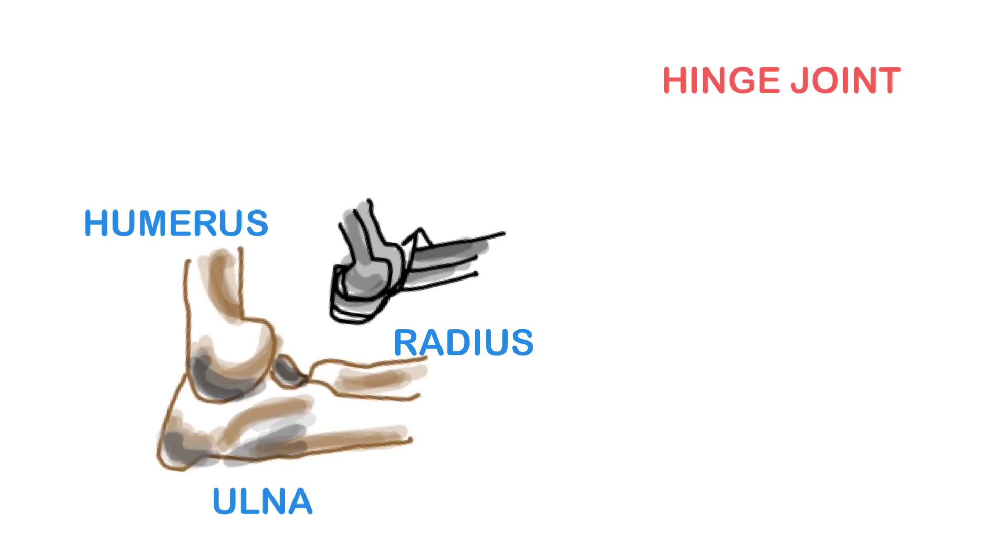Hinge joints. Elbow and knee joints are considered hinge joints and allow only extension and flexion. In these articulations, one bone with a convex or outwardly shaped end will fit into a concave or depressed portion of another.